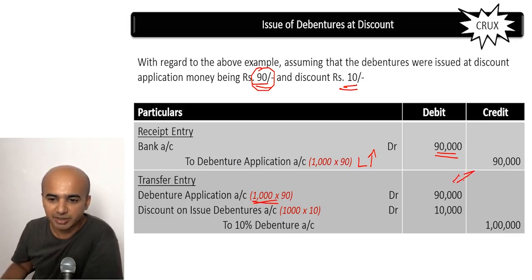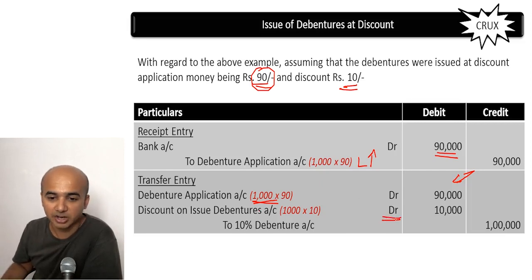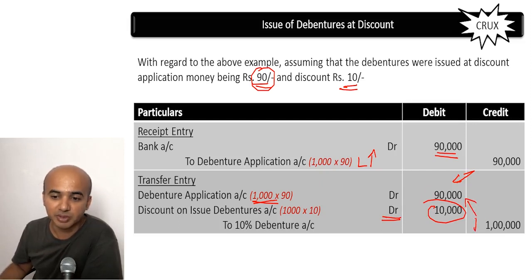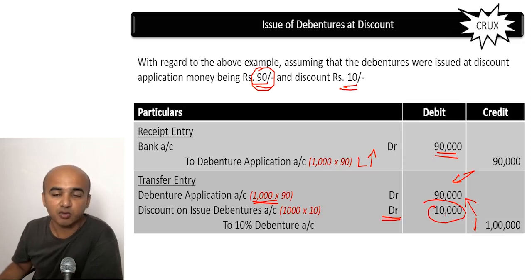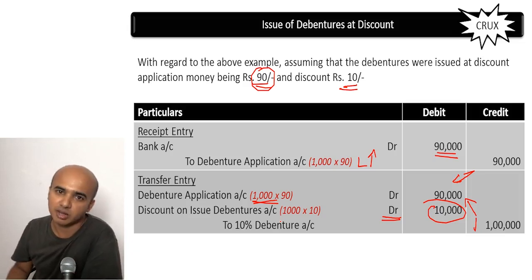Transfer entry: debenture application — the same 90,000 is now debited, decrease in liability, and then discount on issue of debentures — this is the loss or expense for the business — rupees 10,000, because instead of one lakh they have issued those debentures at only rupees 90,000. The remaining rupees 10,000 will be a loss and is debited to discount on issue of debentures. Credit 10% debentures — that is a liability which is increasing to the company.